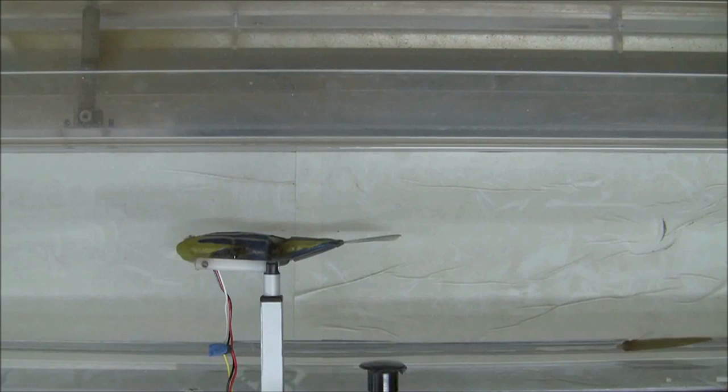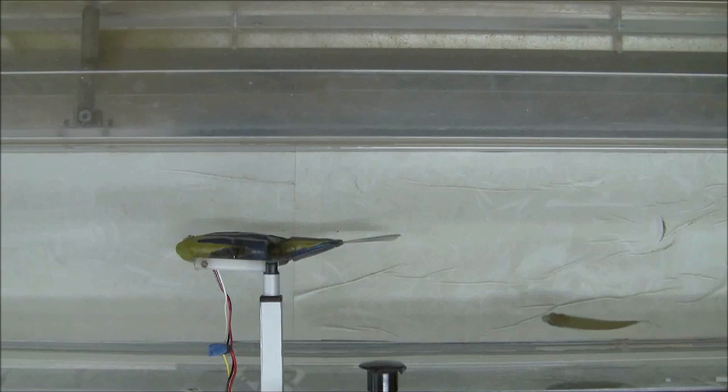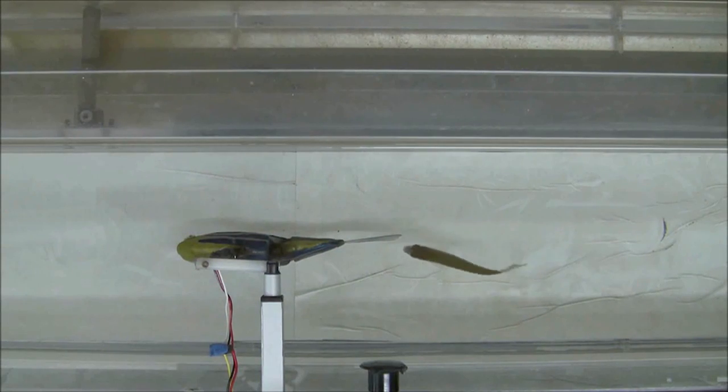And what we find is that beating the tail makes a difference. So if the robot doesn't beat the tail, fish won't care. The fish move about randomly.